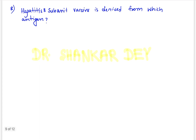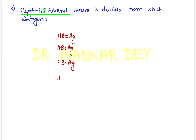Next one-liner question was about Hepatitis B vaccine. The Hep B subunit vaccine is derived from which antigen? The options were HBe antigen, HBs antigen, HBc antigen, or Hepatitis B DNA. The answer is Hepatitis B surface antigen — HBs antigen. The Hepatitis B subunit vaccine is derived from the surface antigen.